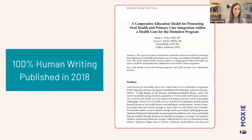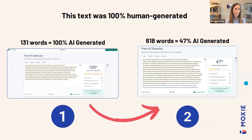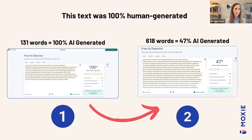I tested several different AI detectors. This is an article I wrote back in 2018 before generative AI existed — 100% human-written — and I fed it into an AI detector. I took 131 words of that article and it said it was 100% AI-generated. I then added more text — the entire abstract — and it changed to 47% AI-generated. It was wrong; it was 100% human-generated. There's also something interesting: the score changes based on the number of words you give it, tending to get it more correct the more words it has. Just giving it a bit more text can change that score, even though it's the same author.